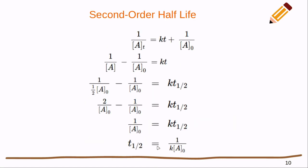For the second order, we start off with the same equation and solve for time, subtracting a term to the other side. We make the substitution where the concentration at t₁/₂ is one half of the initial concentration. Resolving the fraction gives us 2 on top with a common denominator; two minus one is one, so it works out neatly. Dividing by k gives us our equation for t₁/₂.